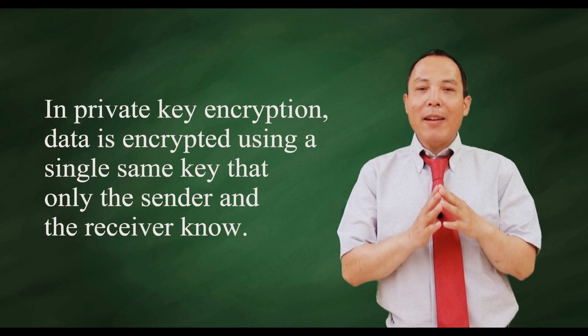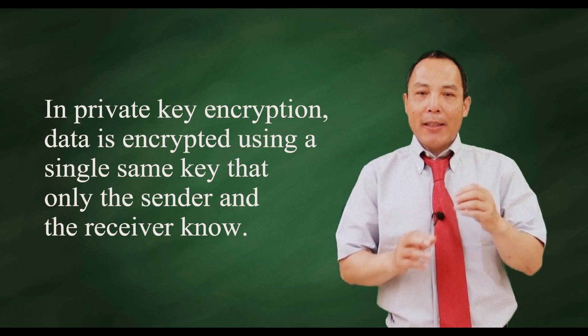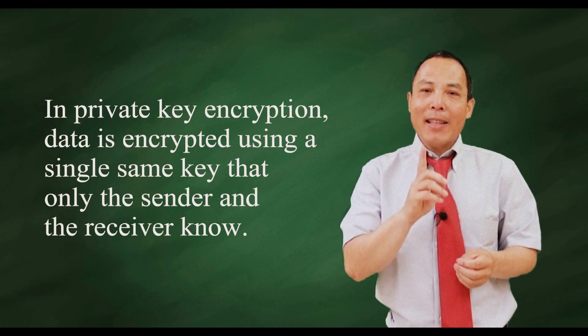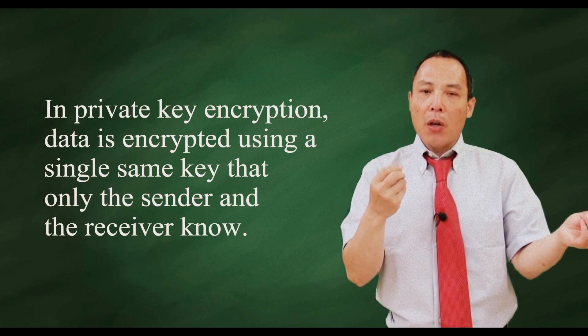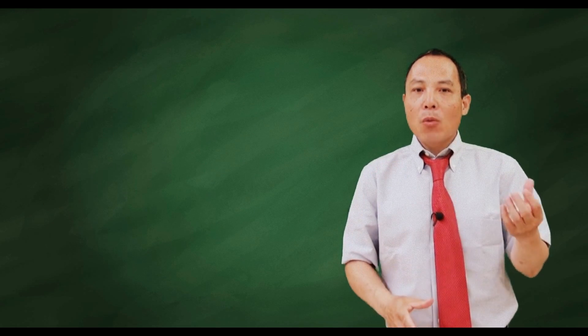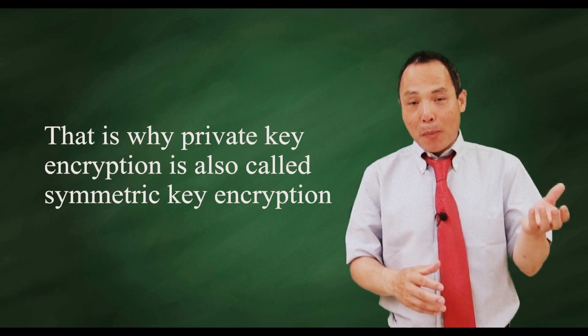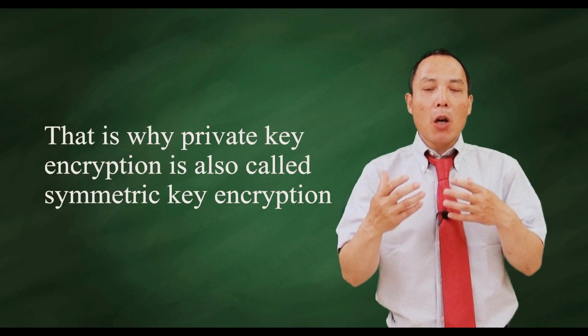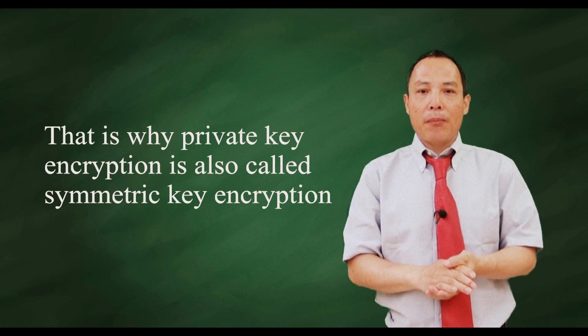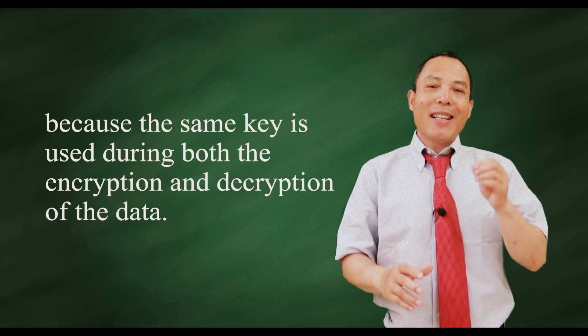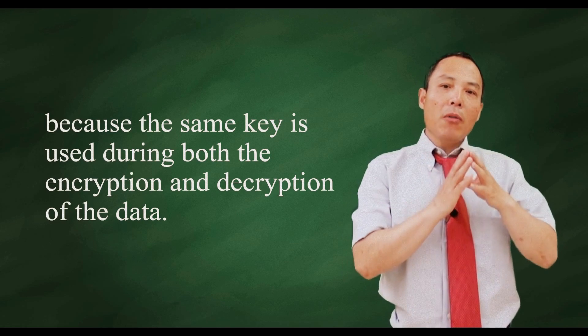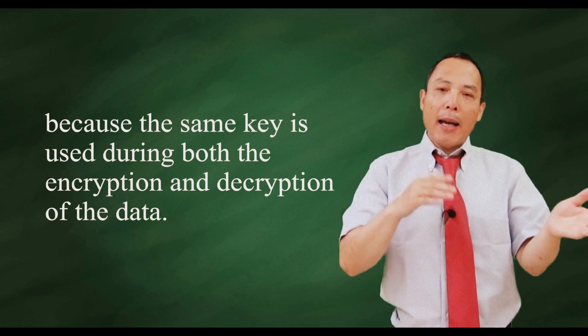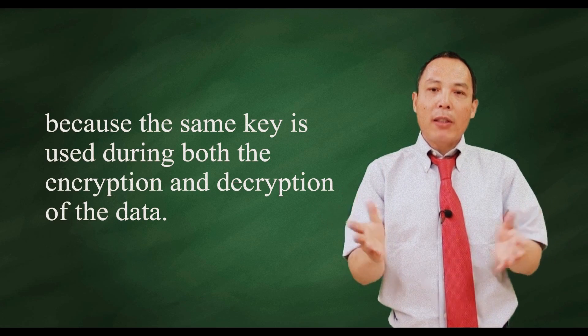In private key encryption, data is encrypted by one single key which sender and receiver know. That's why private key encryption is also called symmetric key encryption, because a single key is used during both encryption and decryption of data.